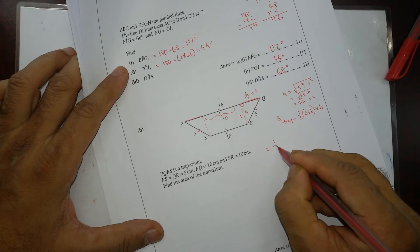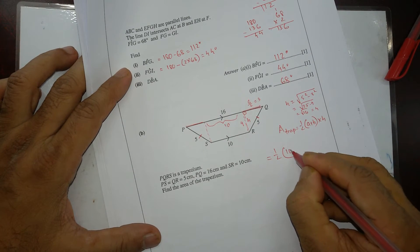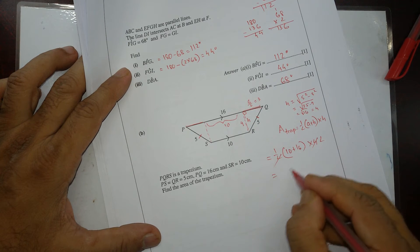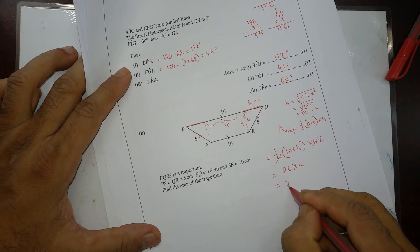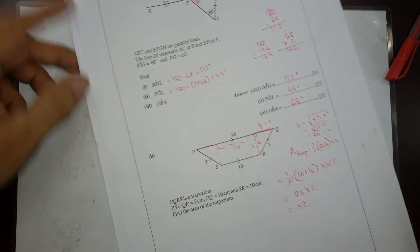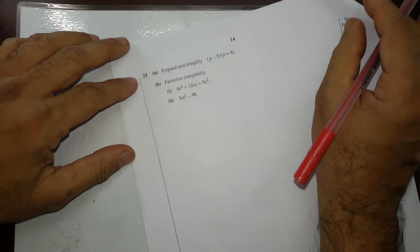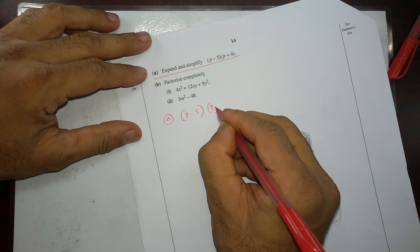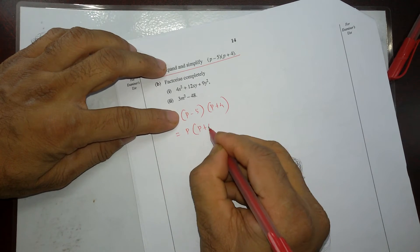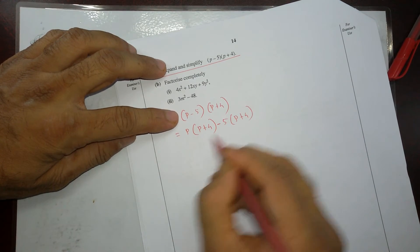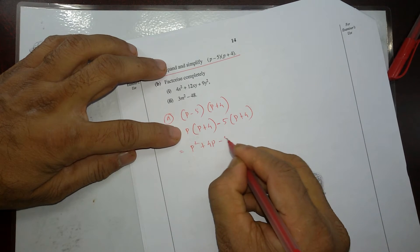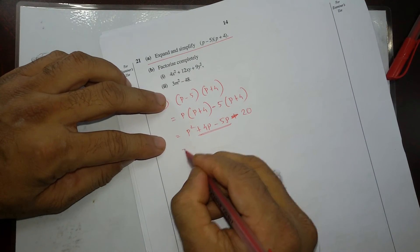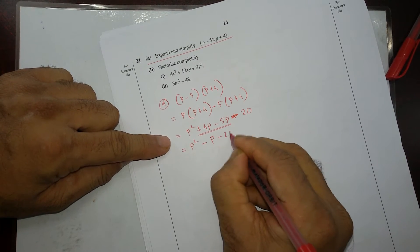Now I can use the trapezium area formula: half times sum of parallel sides times height. Parallel sides are 10 and 16; height is 4. So area equals half times (10 plus 16) times 4. That's 2 times 26 equals 52 square centimeters.